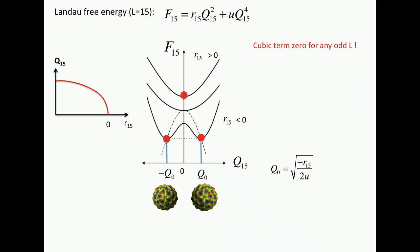These two minima correspond to left and right-handed chirality. The position of the minima just follows from R15 and U. And we call this spontaneous chiral symmetry breaking.